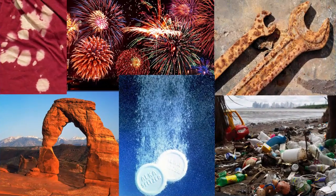Thinking about the different types of chemical reactions, some are going to have rates that are faster and some slower. For example, bleach on red fabric is a very fast reaction. Fireworks is another fast reaction, as is Alka-Seltzer tablets in water. However, there are slow reactions, like rust on a wrench, the decomposition of plastic, and the eroding of rocks. These are different types of rates of reactions we see in normal, everyday objects.